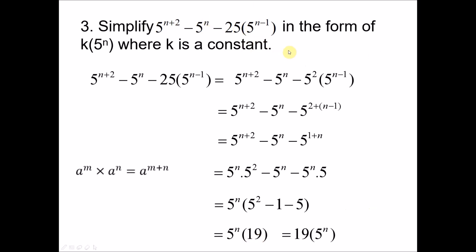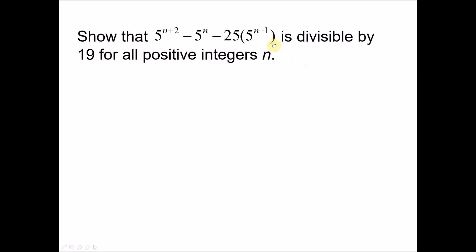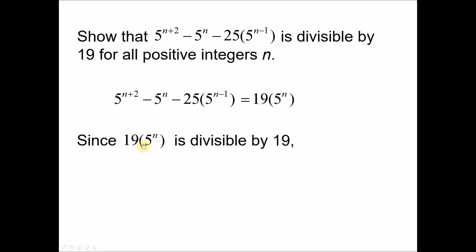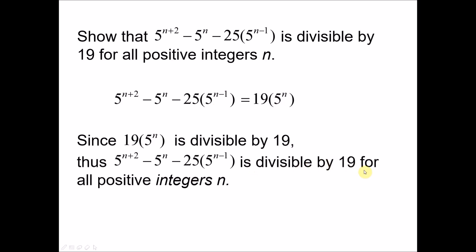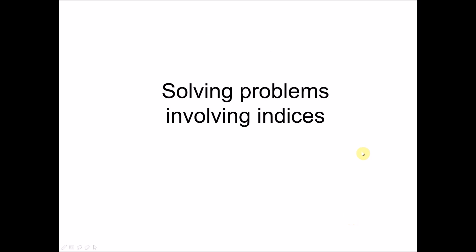For this type of question, there is another way of asking: for example, show that the expression is divisible by 19 for all positive integers of n. What the question asks is for you to simplify the expression — as we have done — and conclude that since 19 times 5 to the power of n is divisible by 19, hence the algebraic expression is divisible by 19 for all positive integers of n. So for the same solution, there can be different ways of phrasing the question. These are all the examples for our Part 1 video. In Part 2, we will look at solving problems involving indices, which I will upload soon. Thank you everyone.